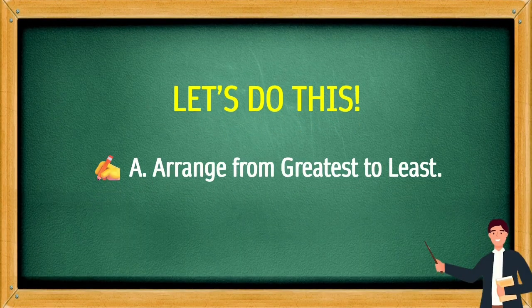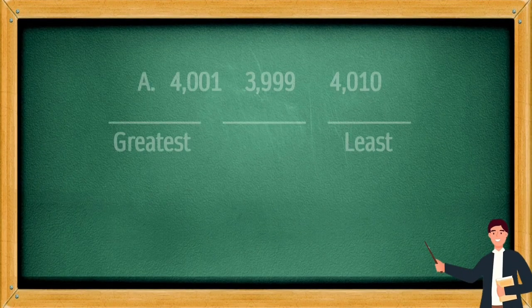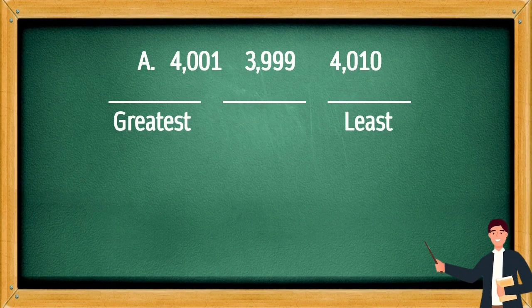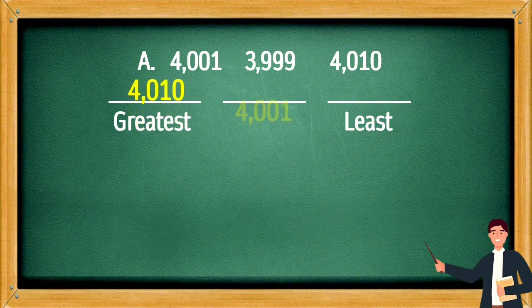Let's do this! Arrange from greatest to least. The greatest is 4,010, next is 4,001, and the least is 3,999.